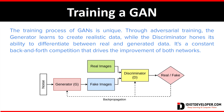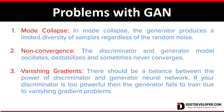Both the generator and the discriminator neural networks are trained iteratively. The generator is trying to improve its ability to create data that can fool the discriminator, while the discriminator is trying to improve its ability to distinguish between real data and the generated data.